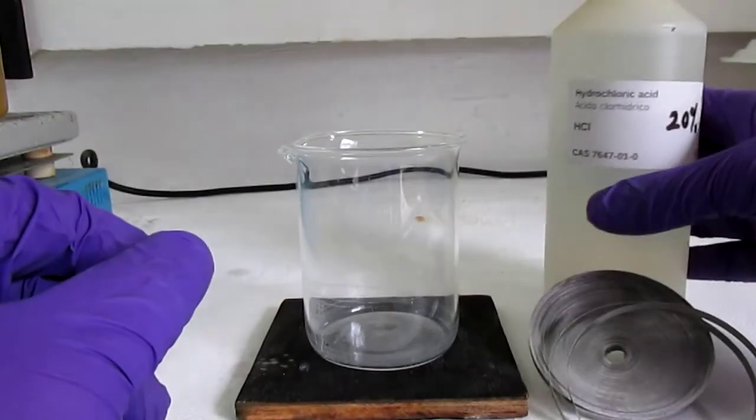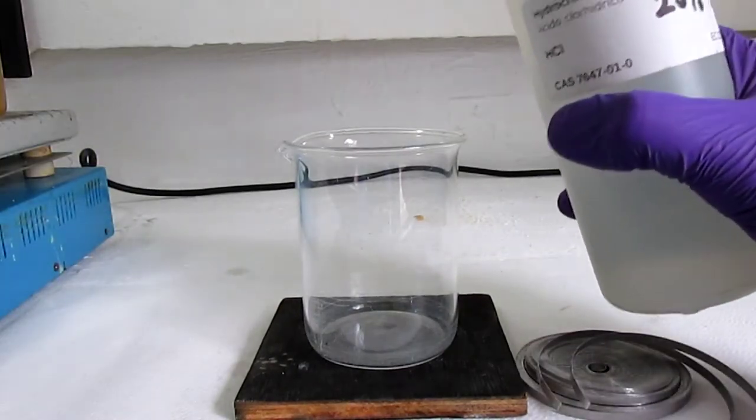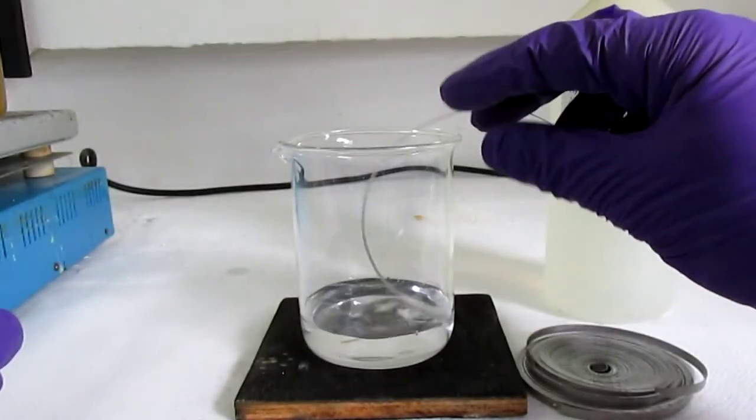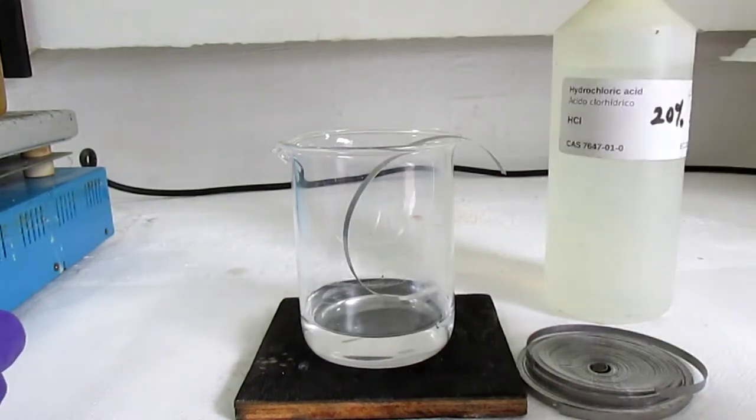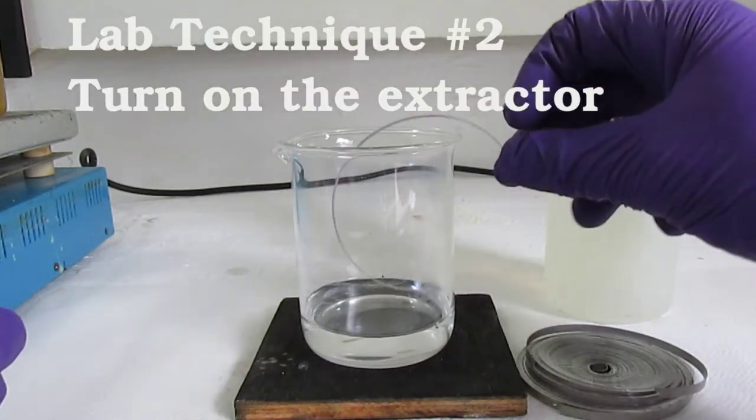To start with, I just put about 50ml of 20% hydrochloric acid into a 250ml beaker and then started adding short lengths of magnesium metal, in this case some ribbon.